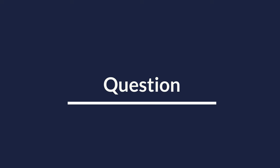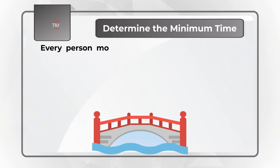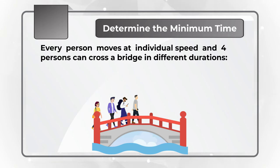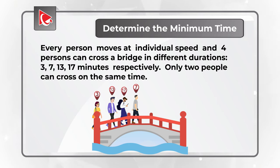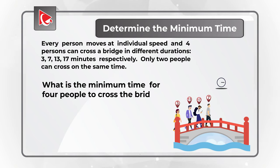Here is an interesting challenge you might frequently see on the test. You need to determine the minimum time for four people to cross a bridge. Every person moves at an individual speed: they can cross in 3, 7, 13, and 17 minutes respectively. Only two people can cross the bridge at the same time. You need to determine the minimum time for all four people to cross.